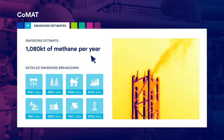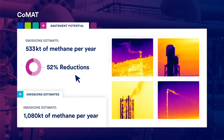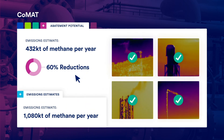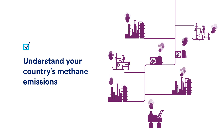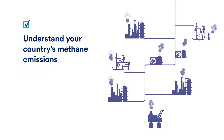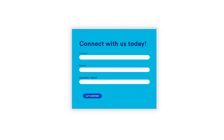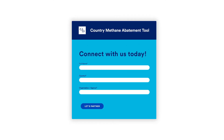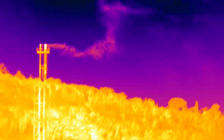Once you've built an estimate for your emissions, CO-MAT allows you to create a mitigation program using proven best practices tailored to your country's specific sources of pollution. Are you interested in developing a better understanding of your country's methane emissions and exploring proven mitigation practices? Contact us today to test out the country methane abatement tool and uncover how much methane pollution can be reduced from your country's oil and gas industry.